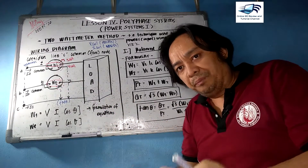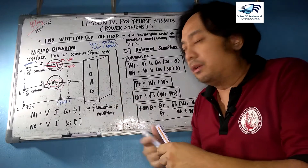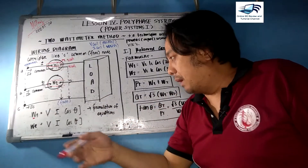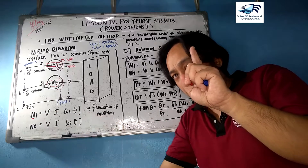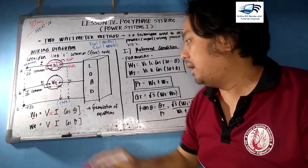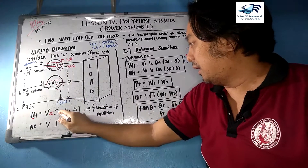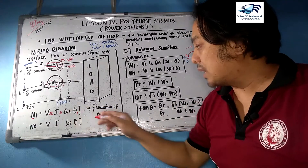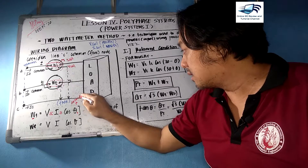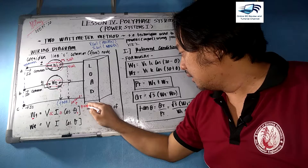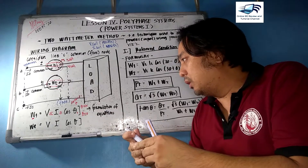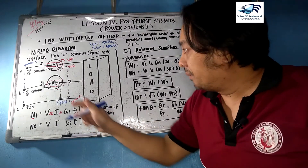To formulate the equation for wattmeter 1, recall that real power equals V·I·cosine(theta). For wattmeter 1, the voltage coil is connected from A to C, so the voltage is VAC. The current flowing through that wattmeter is IA, and theta 1 depends on the angle of voltage VAC minus the angle of current IA.